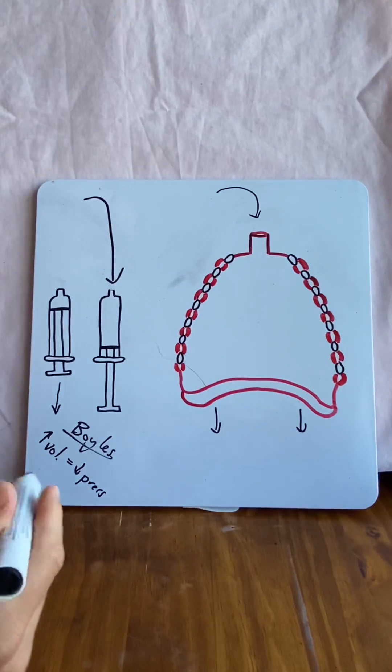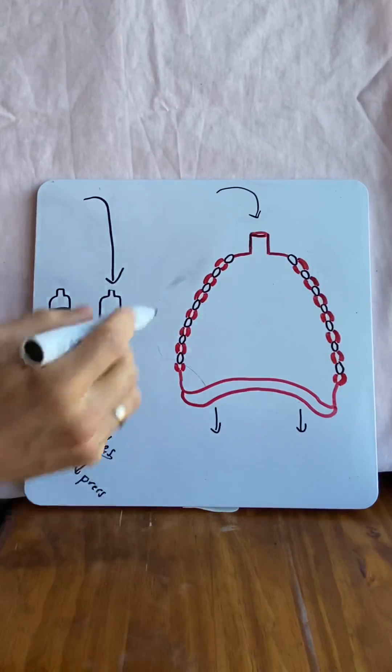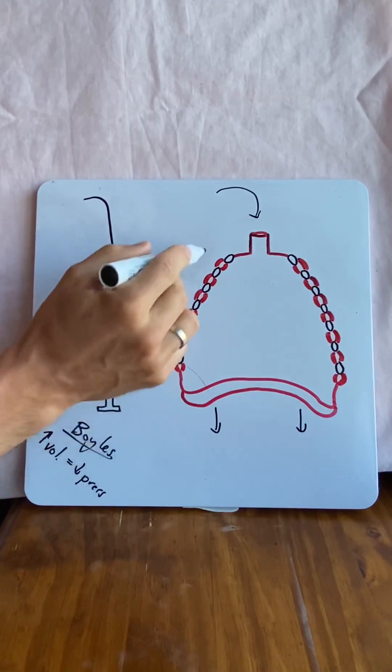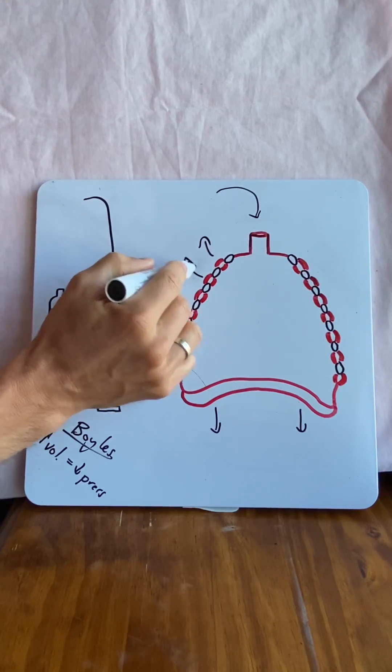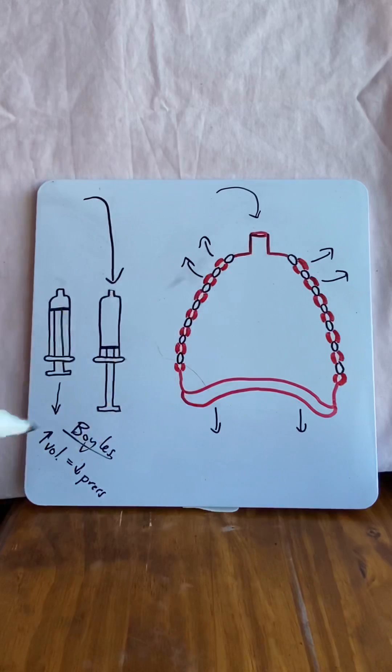But if we want to bring even more air in, we need to continually increase the volume of this thoracic cavity. So we take the external intercostal muscles here, we contract them and pull the ribcage up and out and again, increase the volume, decrease the pressure, more air rushes in.